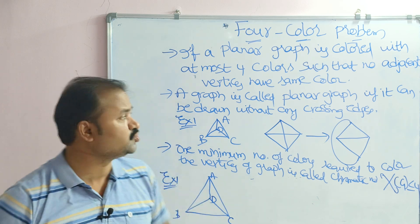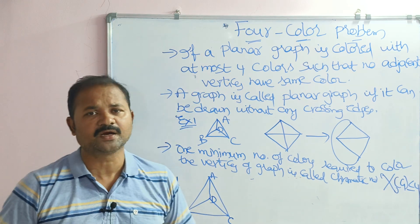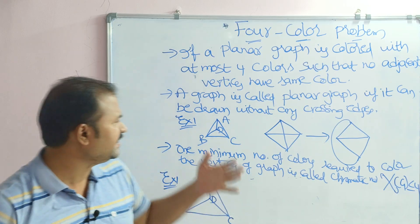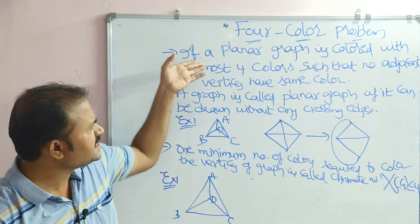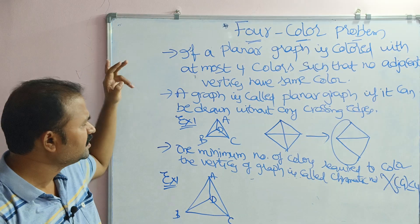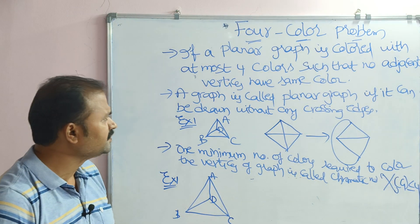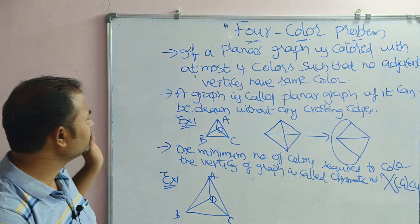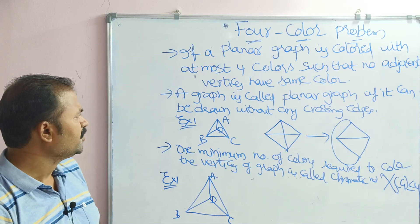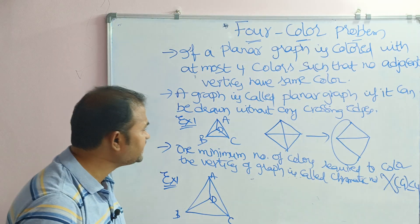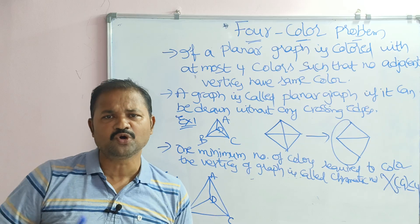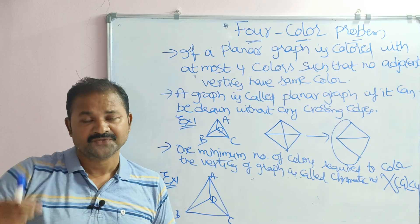Let us discuss the four color problem in discrete mathematics. By definition, for the four color problem, if a planar graph is colored with at most four colors such that no adjacent vertices have the same color. We know about graph coloring — we can color the vertices of a graph by satisfying one condition.